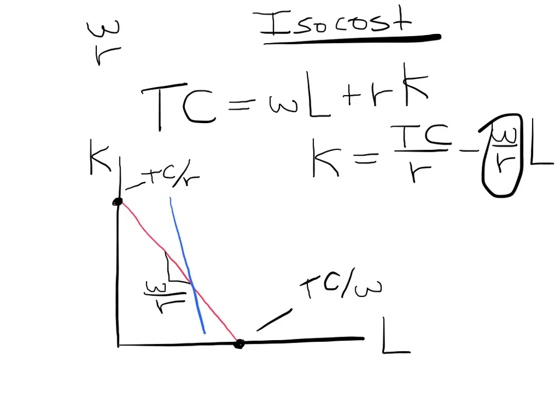What we're going to do in the next section is put the isocost and the isoquant together to find the quantity of inputs that minimize the cost of production.